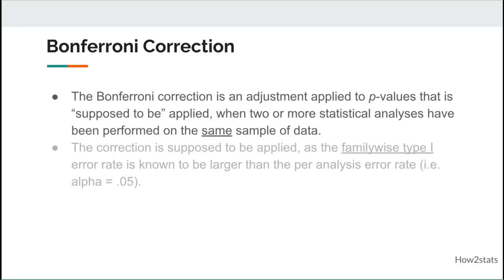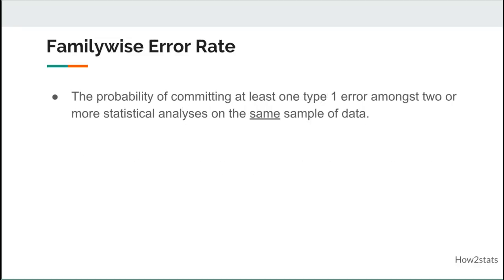The problem the Bonferroni correction is dealing with is that you're conducting multiple analyses on the same sample of data. The correction is supposed to be applied because the family-wise type 1 error rate is known to be larger than the per-analysis error rate. As you conduct more and more statistical analyses on the same sample of data, the family-wise type 1 error rate increases.